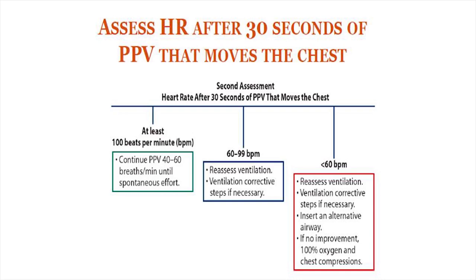Different scenarios after 30 seconds of PPV: if heart rate is more than 100, continue PPV until spontaneous effort. If heart rate is 60–99, reassess ventilation and apply ventilation corrective steps (MR SOPA) if necessary. If heart rate is less than 60, reassess ventilation, give ventilation corrective steps, insert an alternative airway, and if there is no improvement, give 100% oxygen and start chest compression.